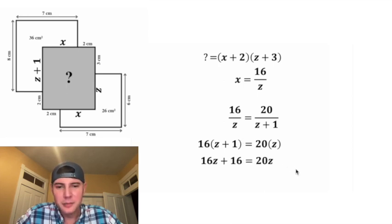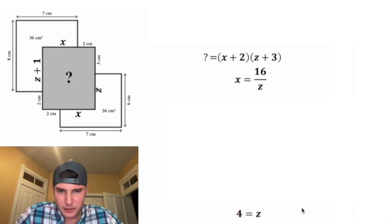Then we can subtract 16z from both sides. On the left-hand side, these are gone, so we just have 16. And on the right-hand side, we have 4z. We can divide both sides by 4, and we have 4 equals z. We can rewrite that as z equals 4.